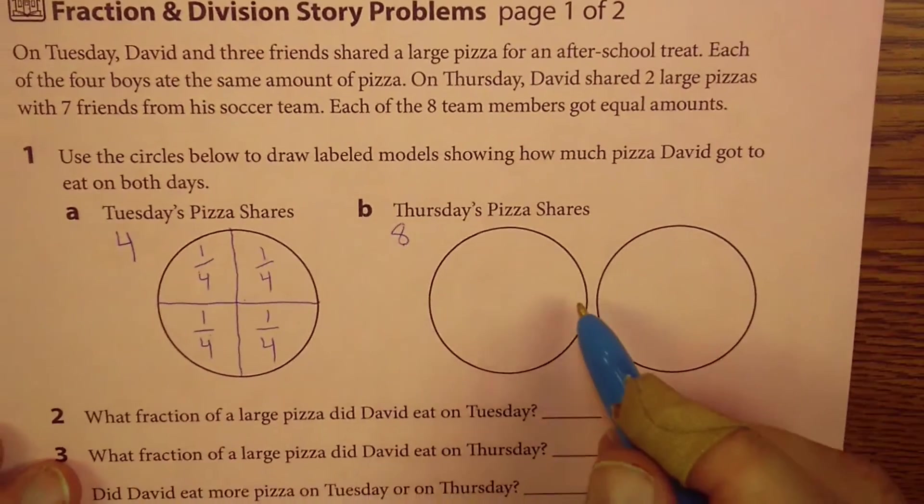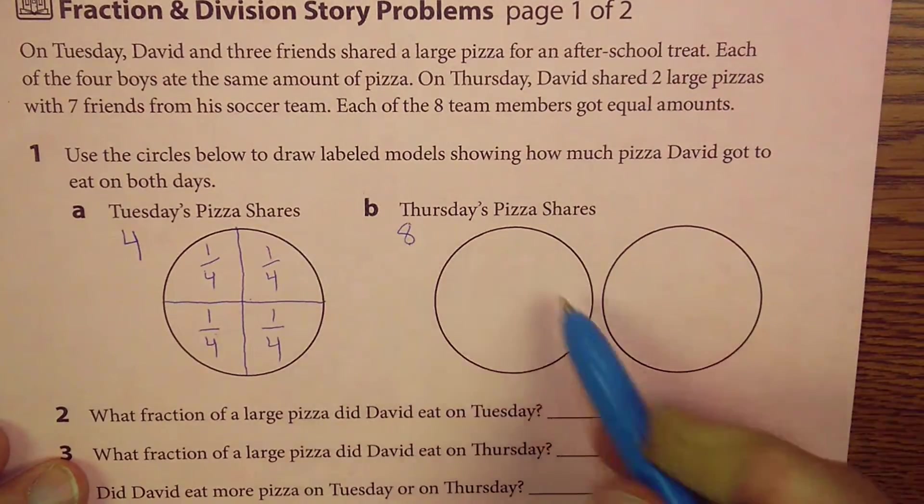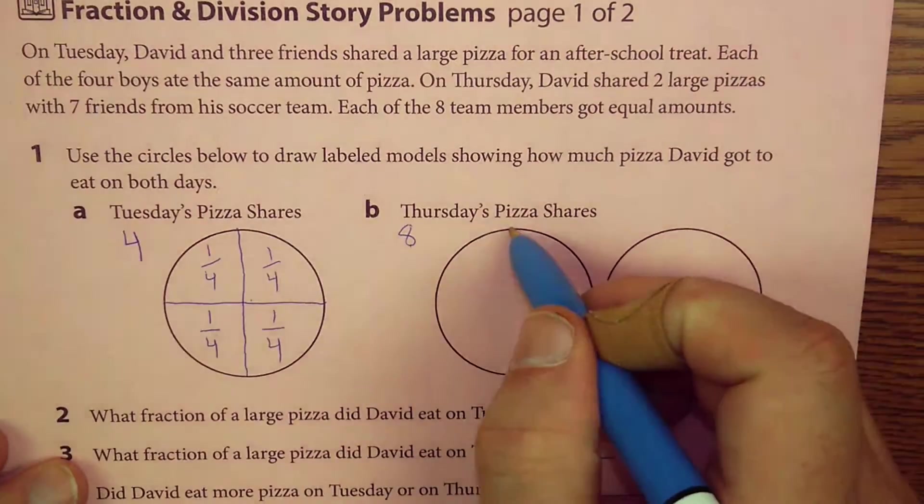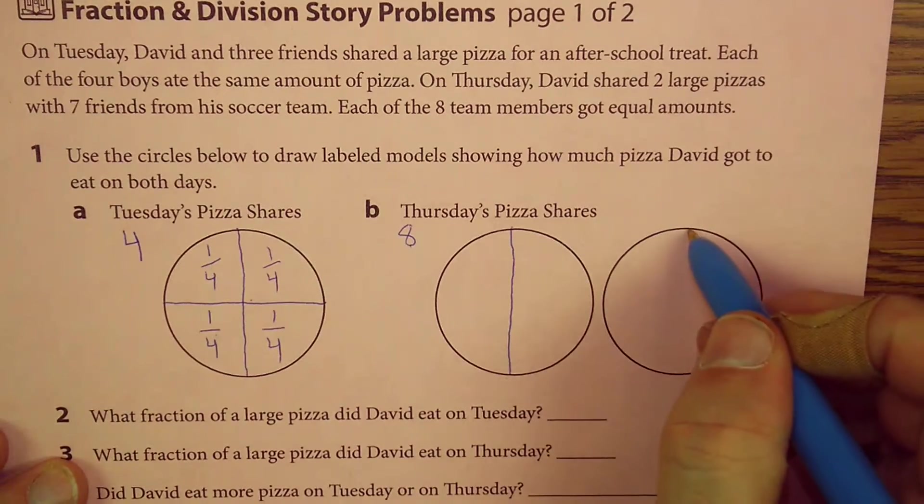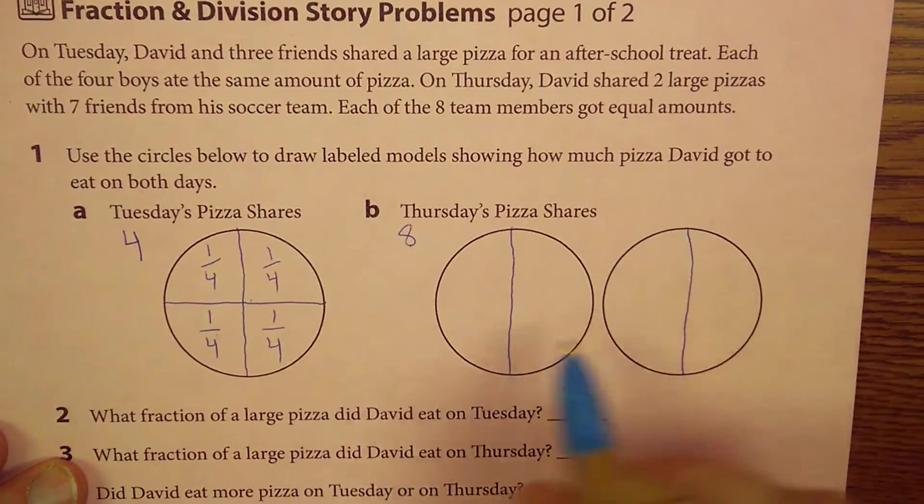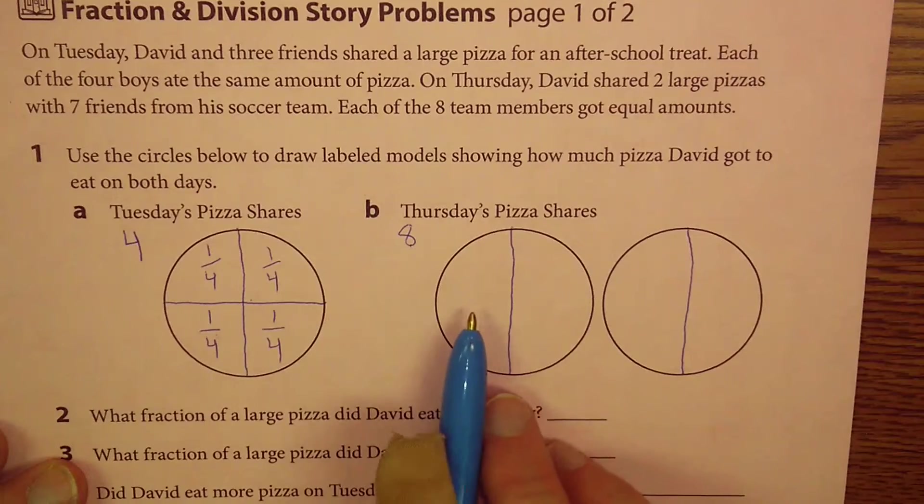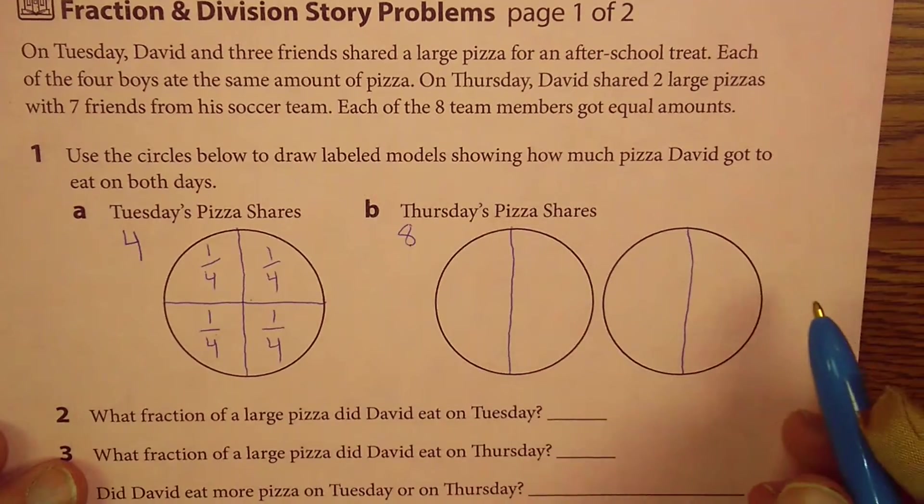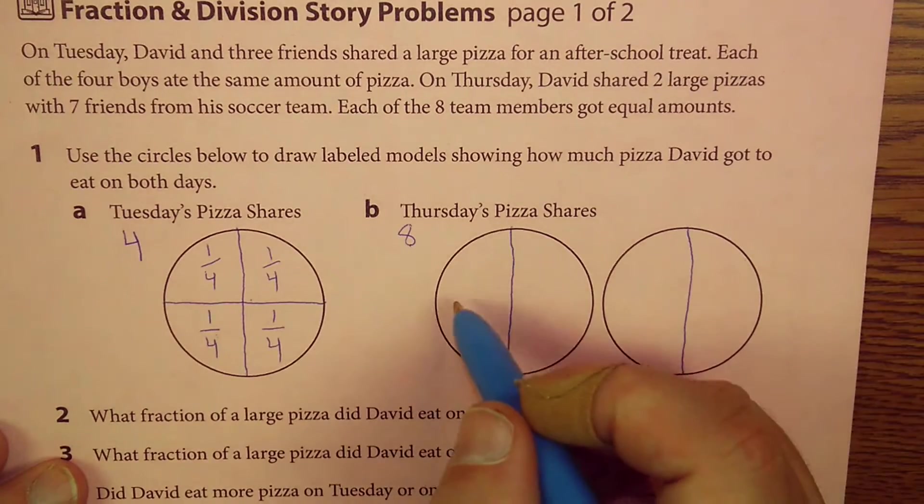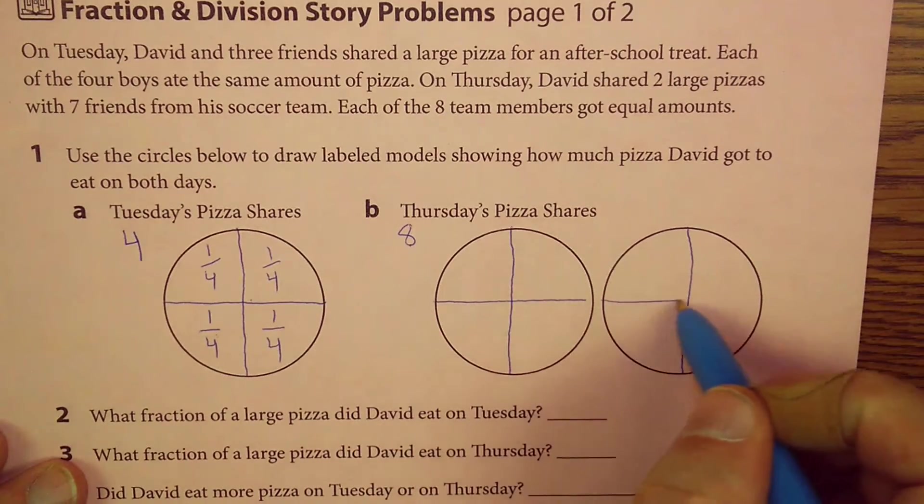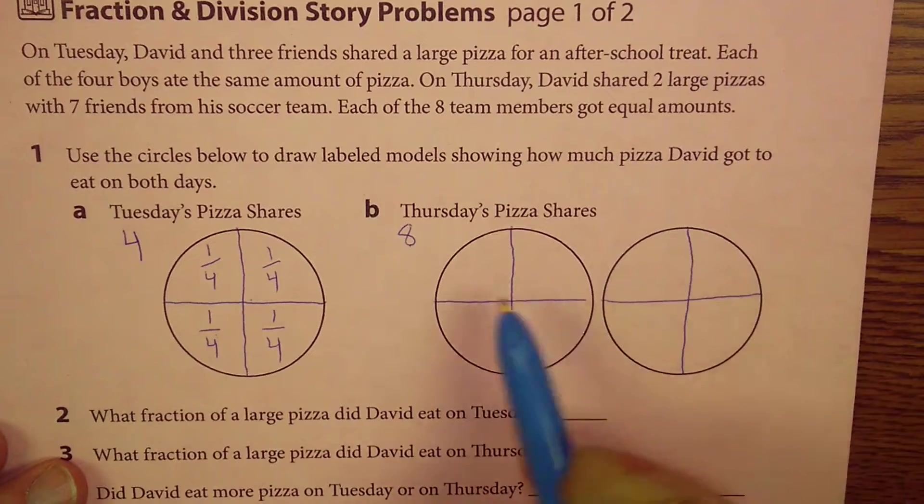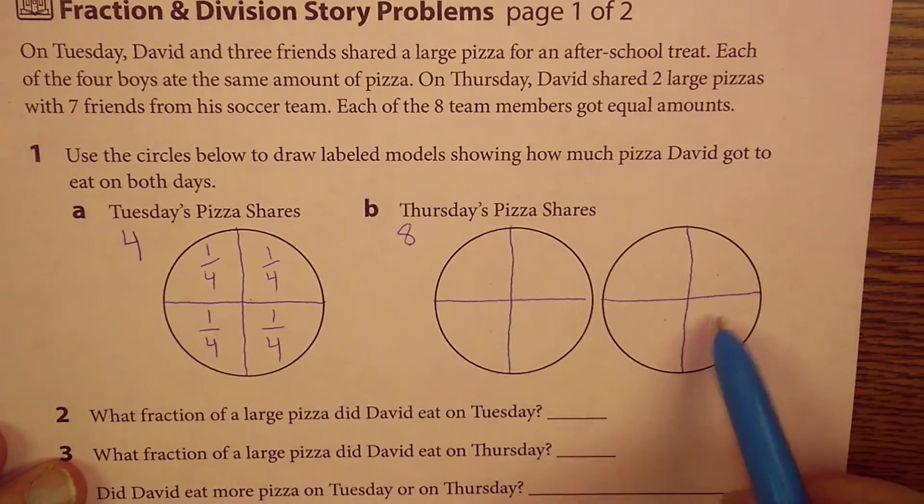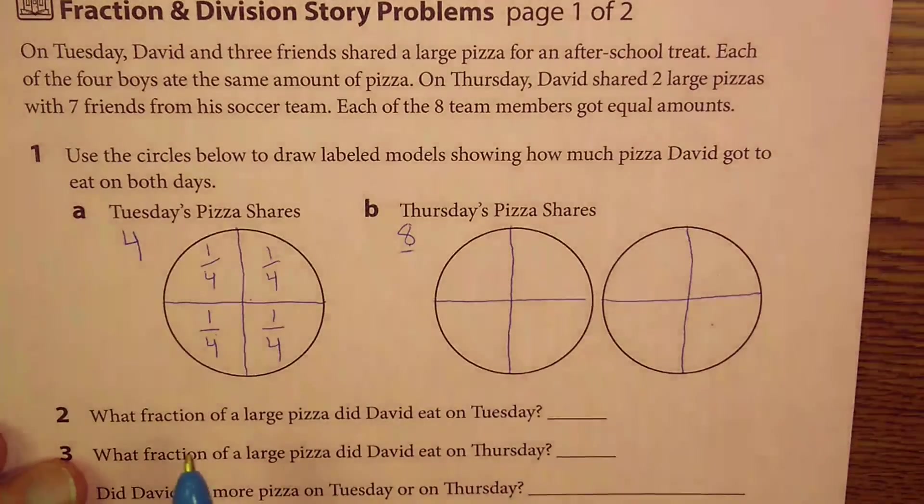Now, somehow, I have to give eight people the same amount of pizza, and let's just start by splitting each one in half. How many people can I feed if I split these pizzas in half? Well, I have one, two, three, four halves, right? I can only feed four people. Well, what if I split each one into four pieces? Well, now, I have one, two, three, four, five, six, seven, eight slices of pizza, and I have eight people.